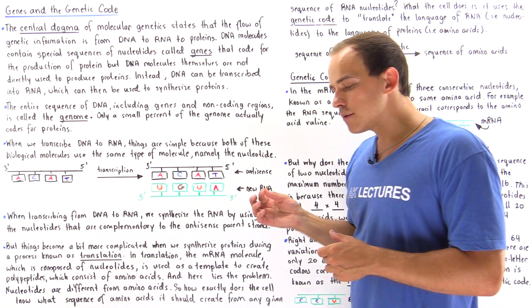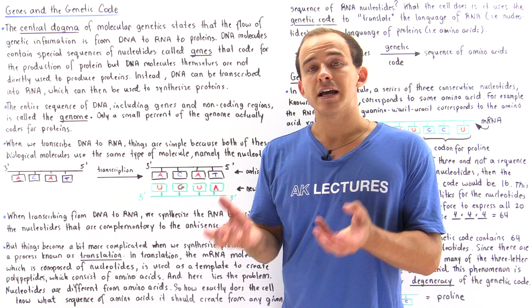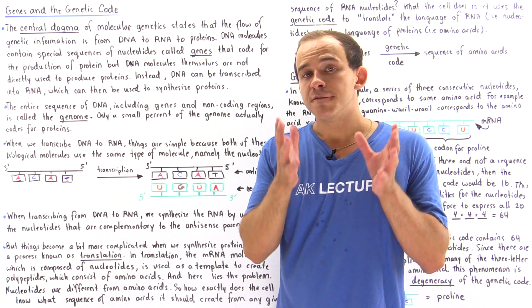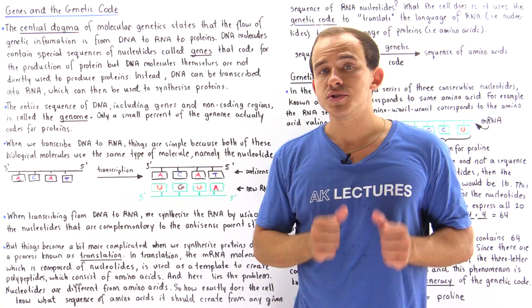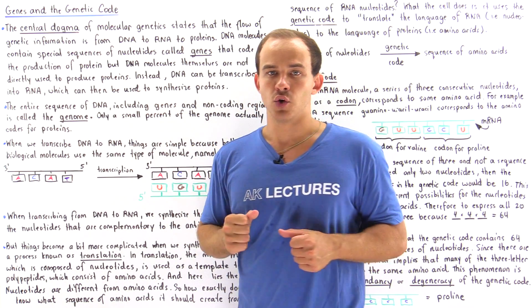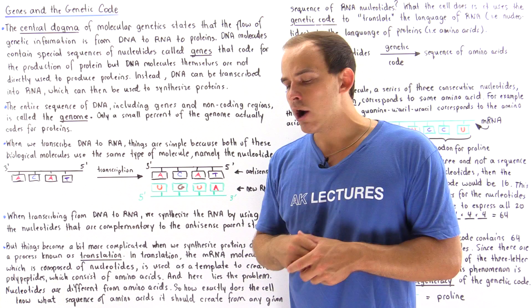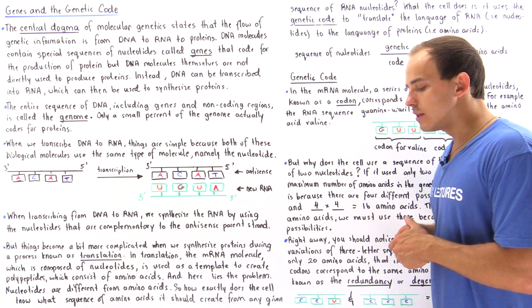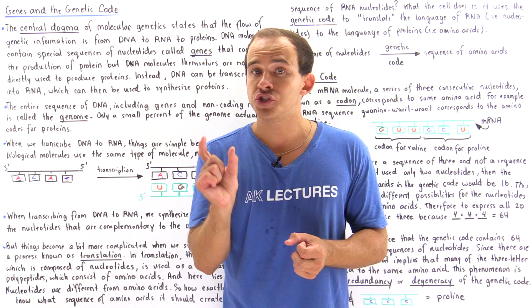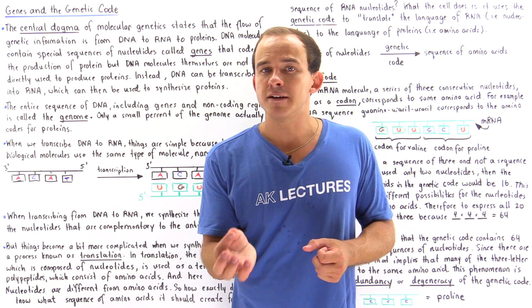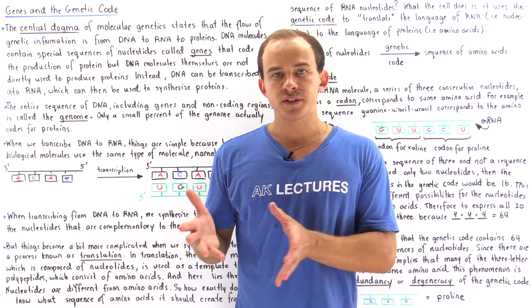The central dogma of molecular genetics is basically a concept that tells us that the flow of genetic information in any cell goes from the DNA molecule to the RNA molecule to the protein. Any given DNA molecule in any given organism consists of genes, and genes are basically specific sequences of nucleotides that code for proteins.